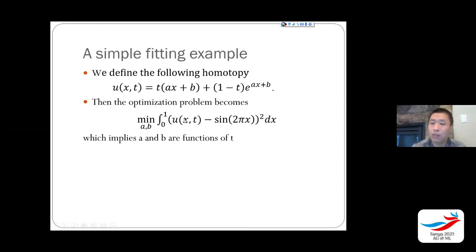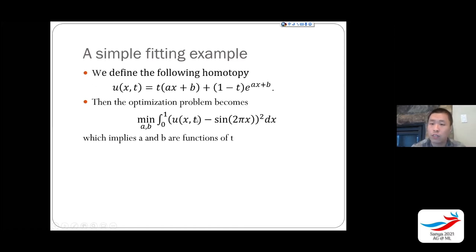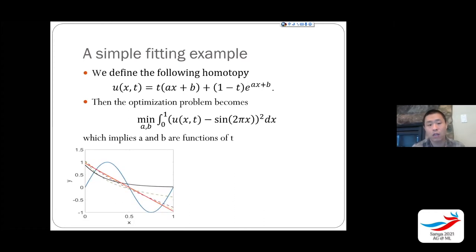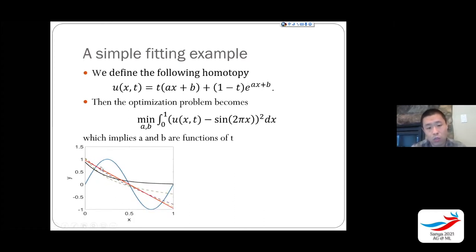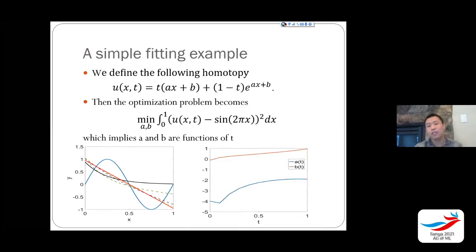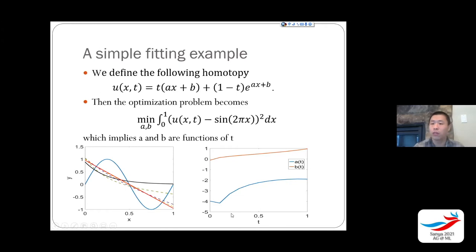What we can do is solve this optimization problem for different values of T. Starting at T=1 where we already have the solution, we decrease T — say to 0.9 — and keep going. Both a and b are functions of T, so we can track T and find a and b from T=1 down to T=0. At T=1 you have a straight line; at T=0 you have the nonlinear fit. This is the homotopy idea.